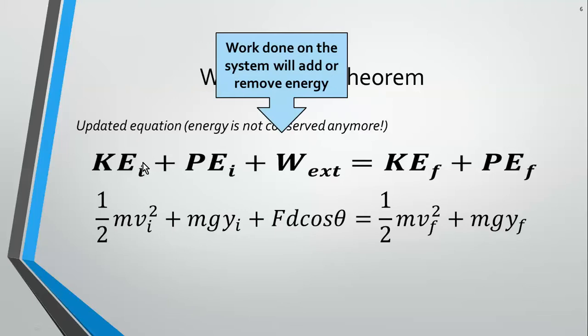So our equations are still going to be one-half mv squared for kinetic energy and mgy for potential energy, and now we're adding in Fd cosine theta for our work done. That might be positive or negative. It depends on what type of work is done to the system.